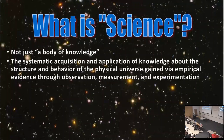Here is a definition from the American Association for the Advancement of Science: science is the systematic acquisition and application of knowledge about the structure and behavior of the physical universe gained via empirical evidence through observation, measurement, and experimentation. We are figuring out in an organized, systematic fashion knowledge about the structure and behavior of the physical universe. We get that knowledge not through revealed wisdom or long tradition, but through empirical evidence — through observation, measurement, and experimentation.